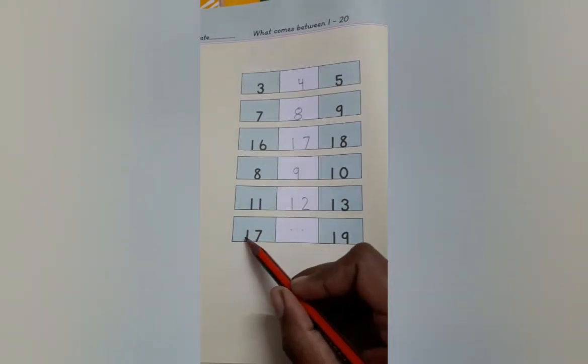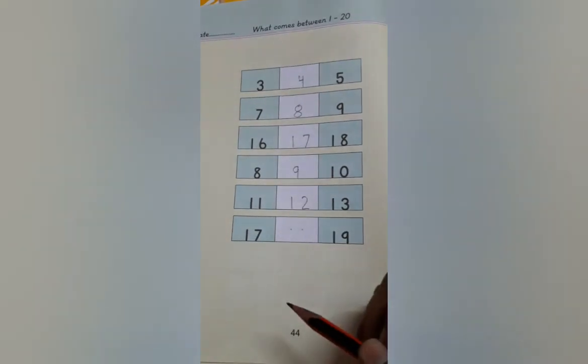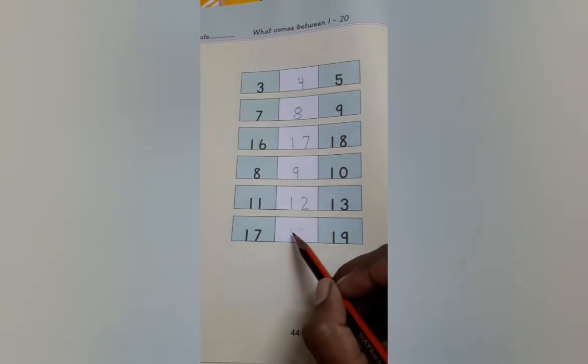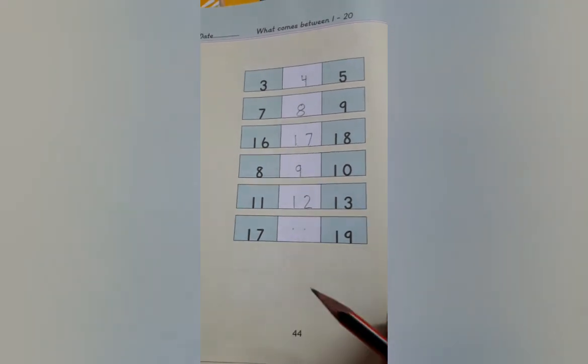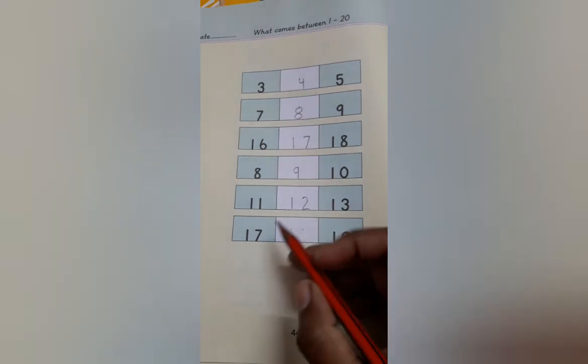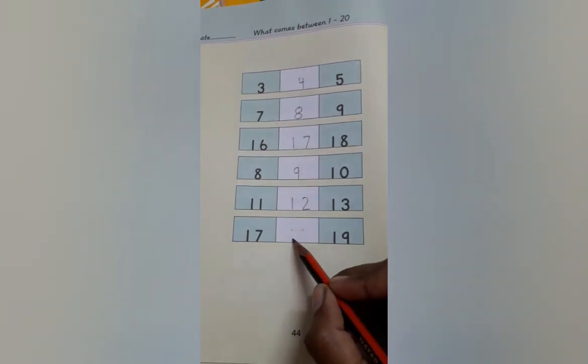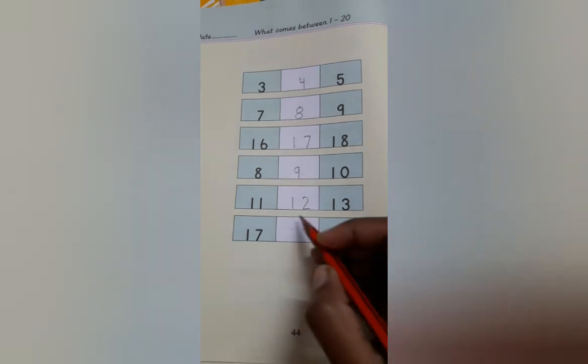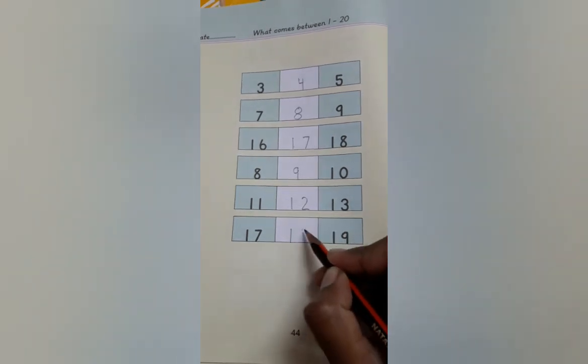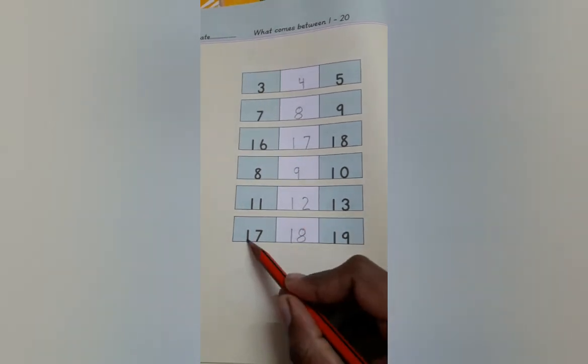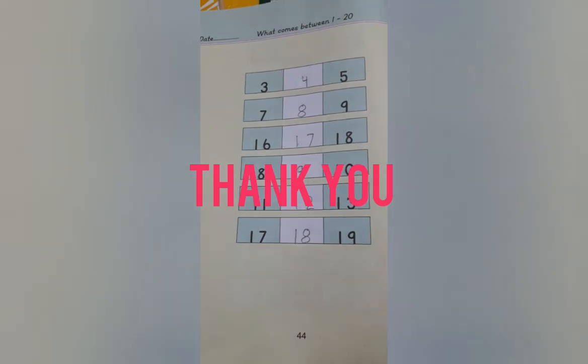Now read this number: 17. Yes. What will come here? 18. Yes. 17. What comes here? Yes. What comes between? 18. Right here. 18. 17, 18, 19. Done.